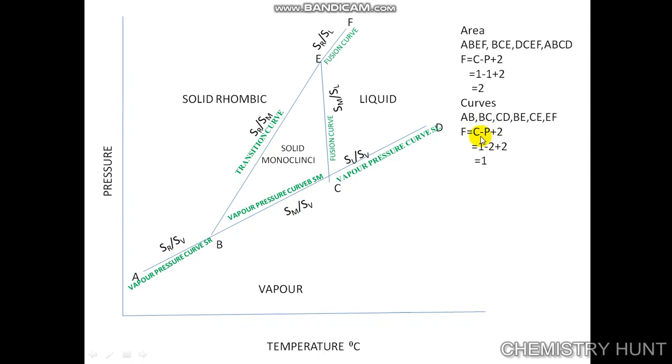Along any of these curves, the degree of freedom is F = C minus P plus 2. For example, on the AB curve, sulphur rhombic is in equilibrium with sulphur vapour, so the component is 1 and phases are 2, giving a degree of freedom of 1. This means we have to specify either temperature or pressure, and the other will automatically be fixed.